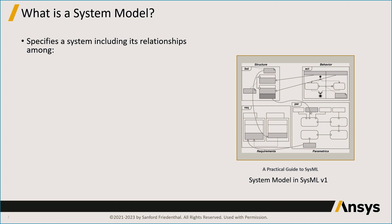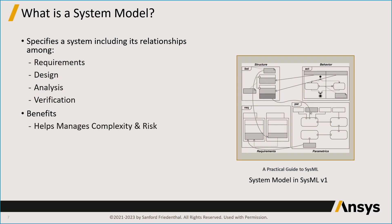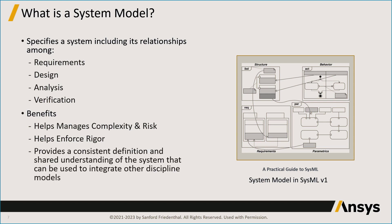So what is a system model? A system model specifies various relationships among the different aspects of a system, including its requirements, its design, and the verification and analysis of a system. It establishes relationships between and within these different aspects to provide a cohesive description of the system. A well-defined system model helps manage the complexity and risk of the system, enforces rigor in the development effort, and provides a consistent definition and shared understanding that can be used to integrate with other discipline models.